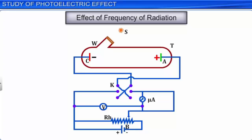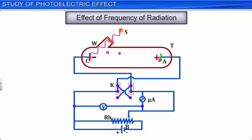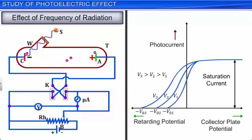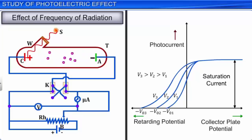Let us now study the effect of frequency of radiation on photoelectric current and on stopping potential simultaneously. When radiation of increasing frequency but the same intensity is incident on the emitter, the number of photons incident per second is the same, and hence the number of electrons emitted per second will also be the same. Therefore, the saturation current is observed to be the same, though the stopping potentials V₀ were observed to increase. As the frequency of radiation increases, V₀ increases. This implies that the maximum kinetic energy of the ejected electrons also increases, according to the relation E = eV₀.